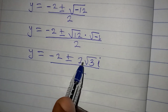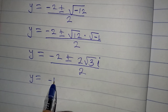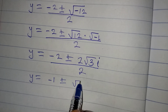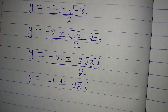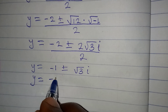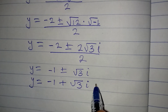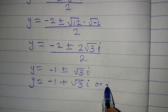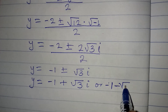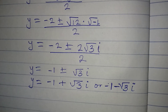Dividing through by 2: minus 2 over 2 gives minus 1, and 2 root 3 i over 2 gives root 3 i. So y equals minus 1 plus root 3 i, or y equals minus 1 minus root 3 i. These are the two other solutions.